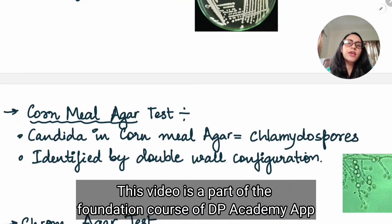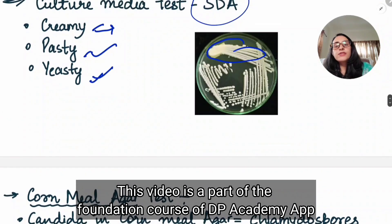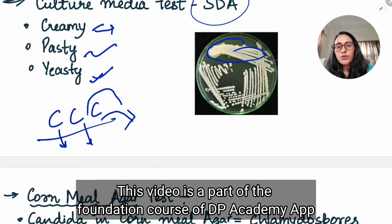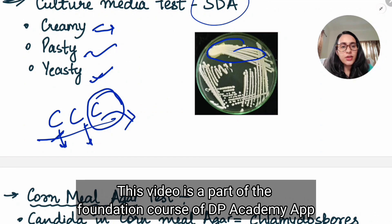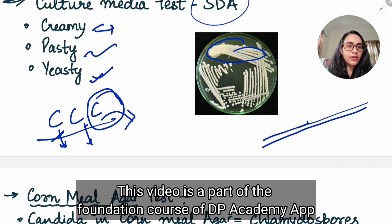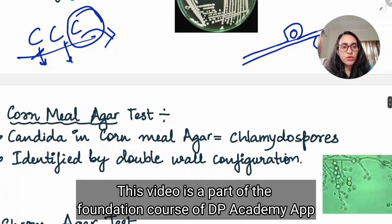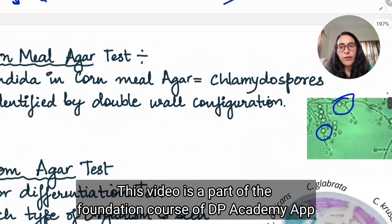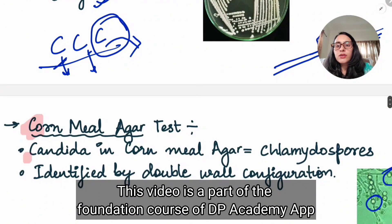From the introduction and classification chapter, we covered the three C's for Candida. One C is cornmeal agar — on the cornmeal agar it is going to show chlamydospores, which have a double wall configuration. Another C is chrome agar, which shows different colors for different species of Candida — for example, different colors for Candida albicans, for glabrata, for tropicalis, or for auris.